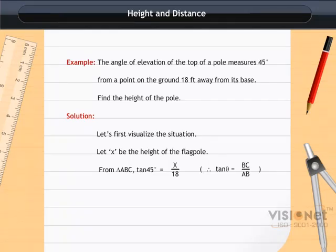It implies X is equal to 18 into tan 45 degree is equal to 18 into 1 is equal to 18. So the flagpole is about 18 feet high.